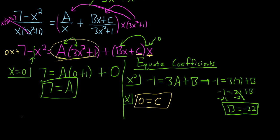Let's plug everything in now. So we have A which is 7. So 7 over x. Plugging it in here. And then B was negative 22. So minus 22x. C was 0, so that goes away. Over 3x squared plus 1.